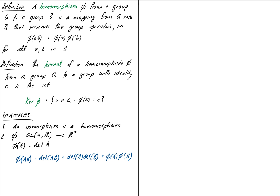What is the kernel? The kernel of phi is the set of all matrices A in GL(n, R) such that det(A) equals the identity, which in the non-zero reals under multiplication is 1. So it's the set of all matrices with determinant one, which is just the special linear group SL(n, R) of n-by-n matrices with real entries. That's quite a nice, easy-to-grasp example.